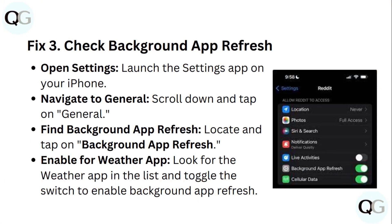Step 3: Check Background App Refresh. Open the Settings app on your iPhone and navigate to General. Scroll down and tap on Background App Refresh. Look for the Weather app in the list and toggle the switch to enable Background App Refresh for it.